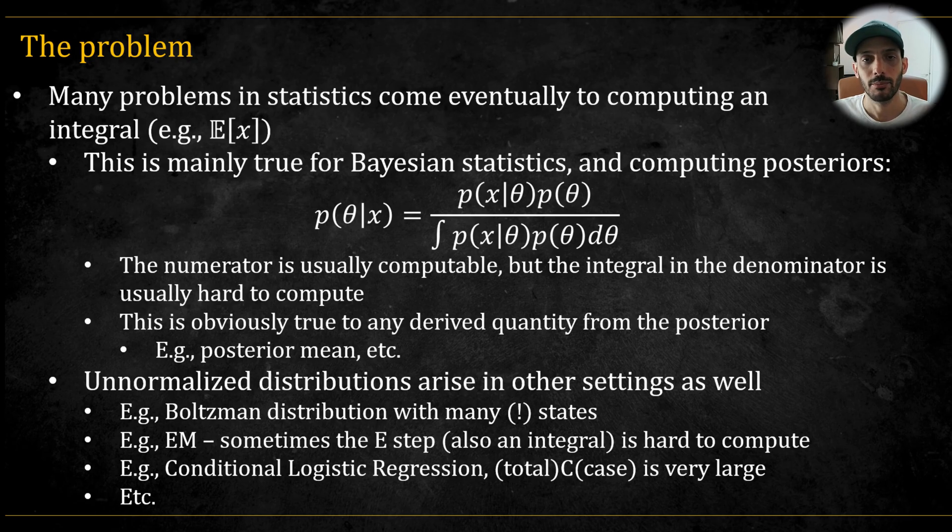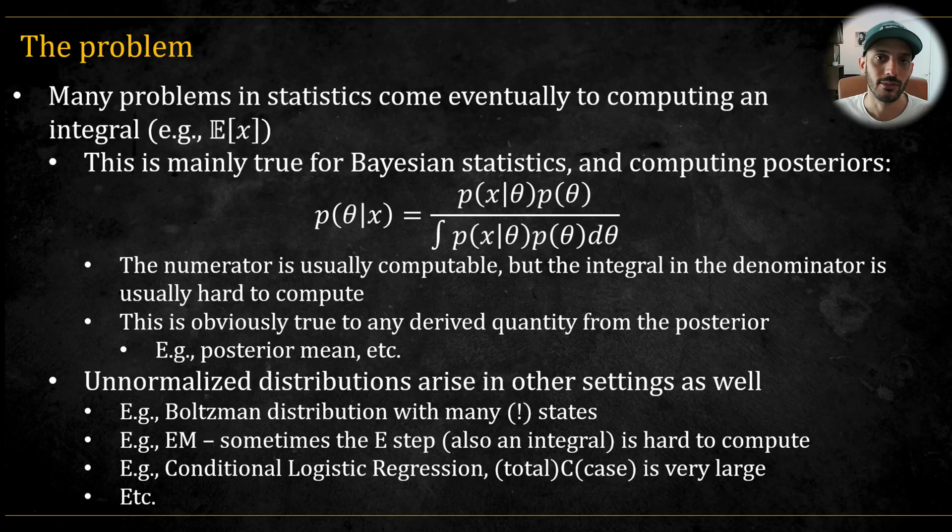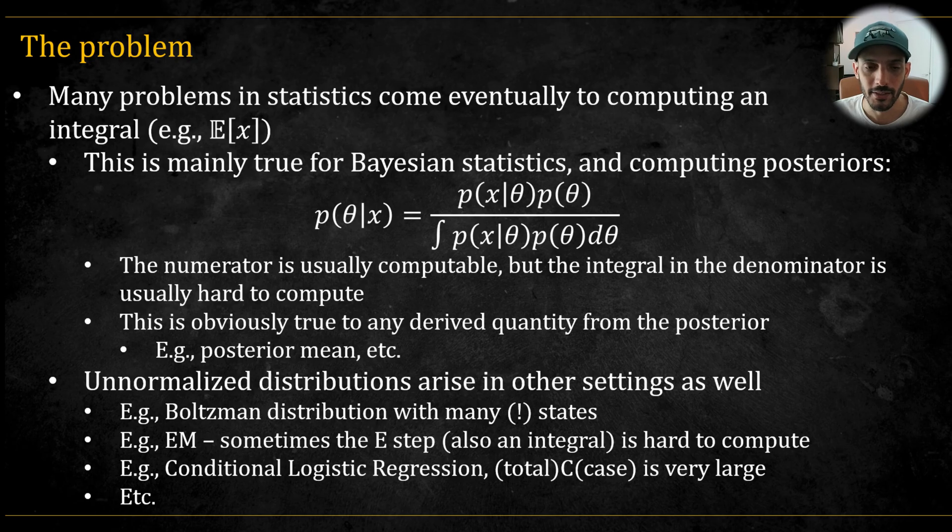For example, the Boltzmann distribution, which is also known as the Gibbs distribution or the canonical distribution, was the original problem that gave birth to the first MCMC algorithm. In this high-dimensional distribution, there are simply too many states, and most of them have very low probability. So computing the integral, or more precisely the sum in the original problem, is impossible.